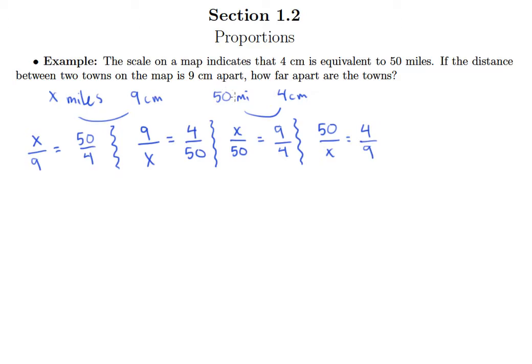So we'll go ahead and take our cross product. We multiply 9 and 50. So 9 times 50 equals 4 times x. And I don't need any scratch work. I know 9 times 5 is 45, but I'm actually multiplying by 50, so I'll just add a 0. So 450.